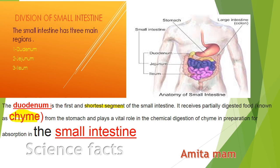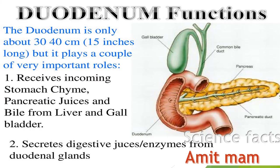The partially digested food is known as chyme. So the duodenum's main function is to receive partially digested food (chyme) coming from the stomach, and it plays a vital role in the chemical digestion of chyme in preparation for absorption in the small intestine. We will now move to the next slide covering duodenum function.